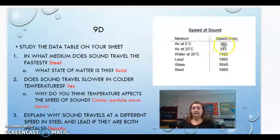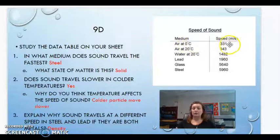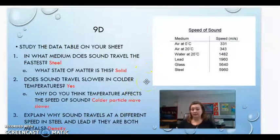One is at zero degrees and one is at 20 degrees. So if we look at the speed of those two, we can see that zero degrees is slower moving than 20 degrees. So the colder it is, the slower it moves. So the answer is yes. Colder temperatures do make it travel slower.